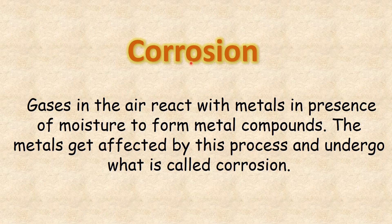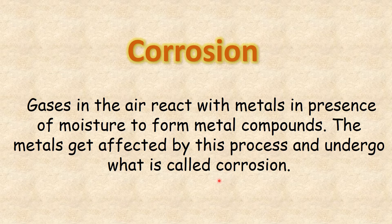Corrosion means: gases in the air react with metals in the presence of moisture to form metal compounds. The metals get affected by this process and undergo what is called corrosion — the gases present in the air react with metals and form compounds.